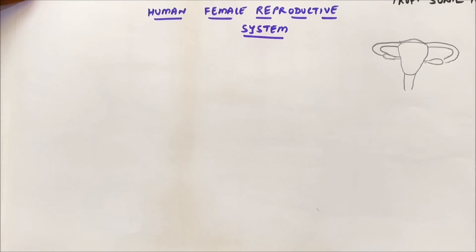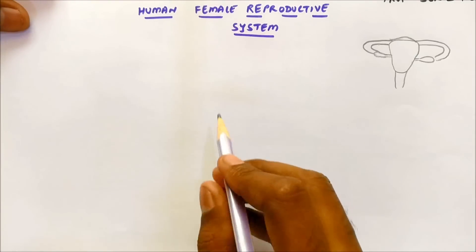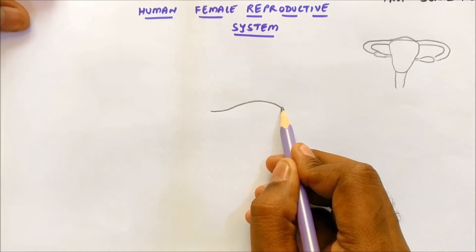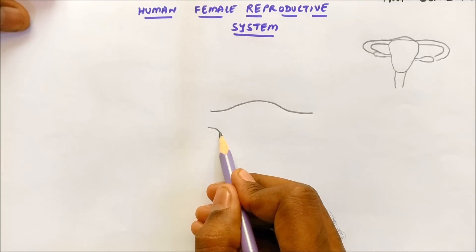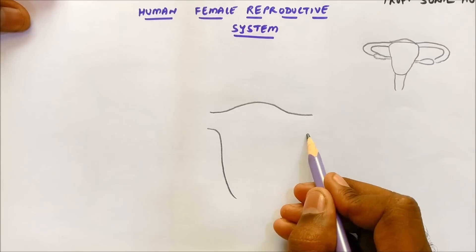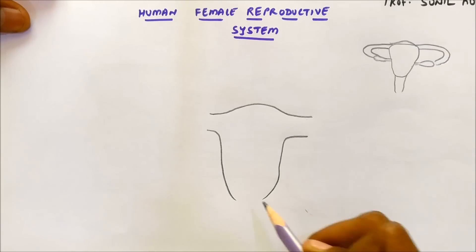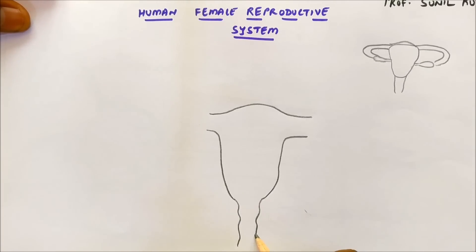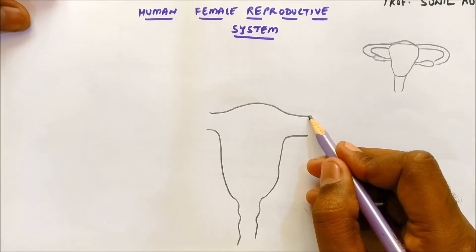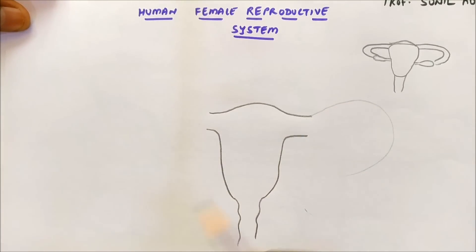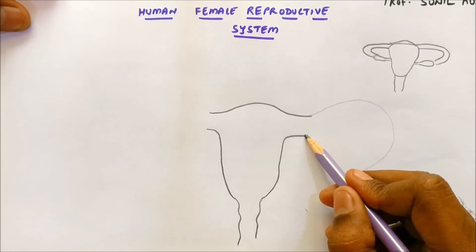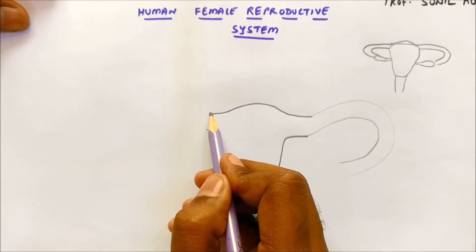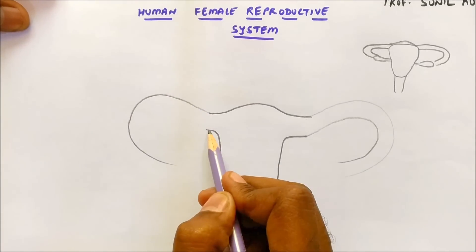Now let's understand in detail how to draw the female reproductive system. First, you put a dome-shaped structure like this. After this, we bring it down — this part that we're bringing down is the uterus of the female reproductive system. This part is a little bit curvy and wavy. After this, there's a freehand turn that we put in this way.